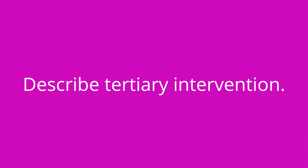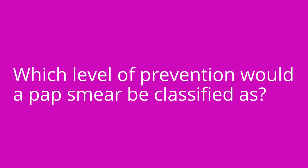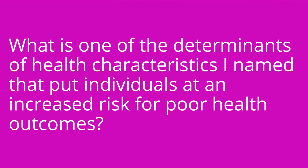Go ahead and describe tertiary prevention. Tertiary prevention includes interventions aimed at slowing or stopping disease progression and the complications that may occur after a disease has been diagnosed. Which level of prevention would a pap smear be considered? A pap smear is a screening, which makes it a secondary prevention level. What is one of the determinants of health that puts an individual at higher risk? Low socioeconomic status, minority or marginalized populations, and individuals that have social isolation.